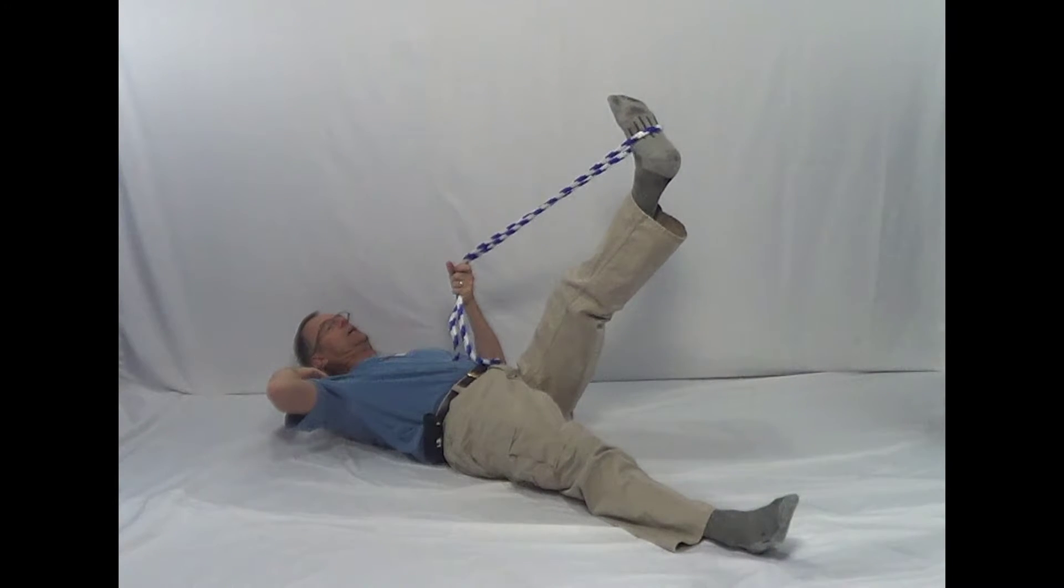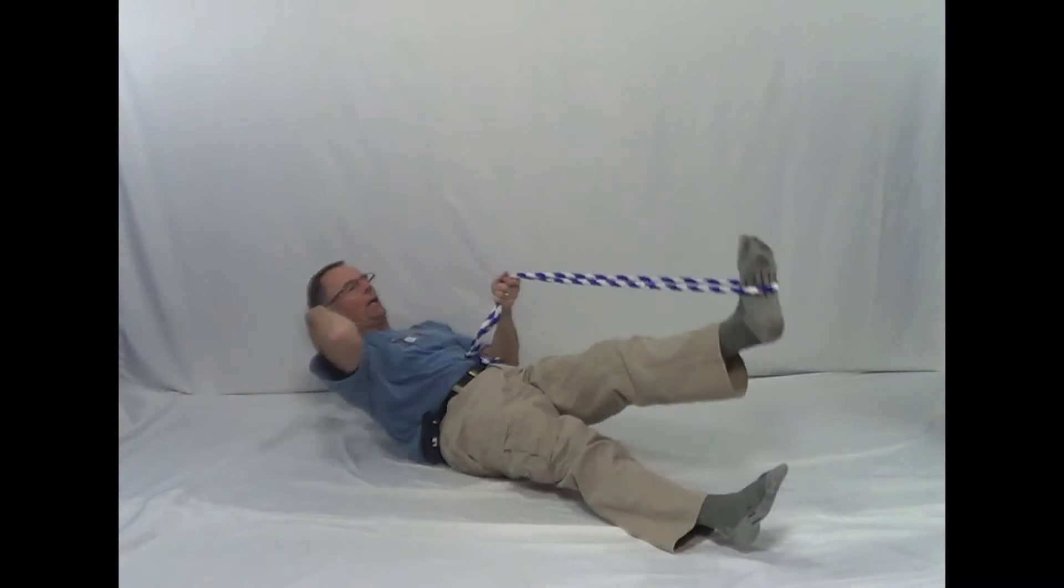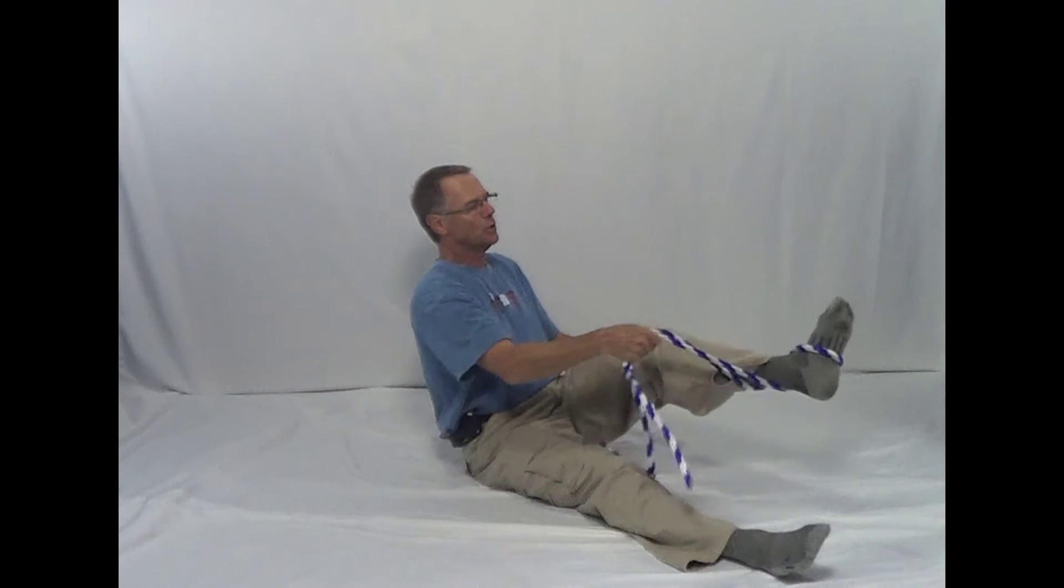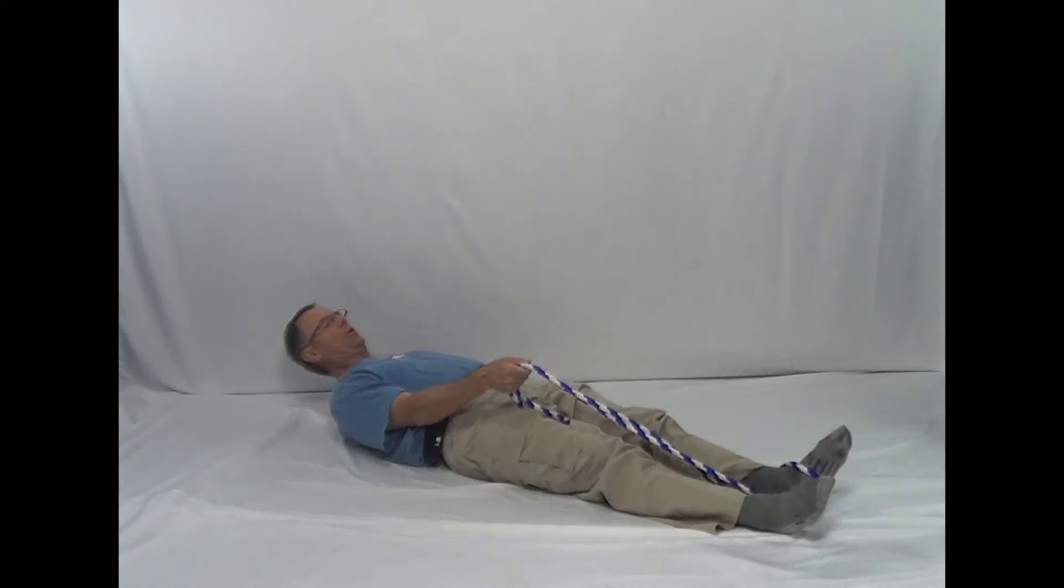If you want to sit up easily, all you do is you hold on to the rope and you bring your leg down and you come up. You don't even have to fire your stomach muscles. So when you switch that's how you do it. This one's done, now going to go in this direction.